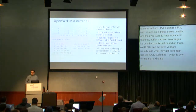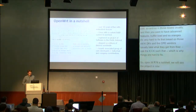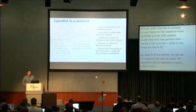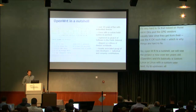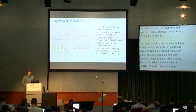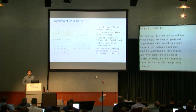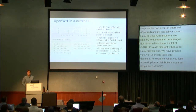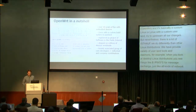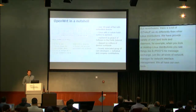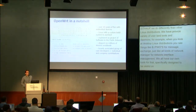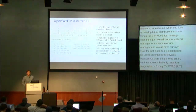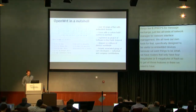So OpenWRT in a nutshell: the project is now over 10 years old and it's basically a custom Linux with a custom user land. We try to upstream all our changes to the actual kernel. There's a lot of stuff that we do differently than other Linux distributions. We have a wide variety of user land tools and daemons. When you look at desktop Linux distributions you see things like D-bus for message exchange, network manager for network interface management — we have our own tools for that, specifically designed to be useful on embedded devices because we want things to be small. We have routers that only have four megabytes or eight megabytes of flash, so we need a really lean and lightweight system.